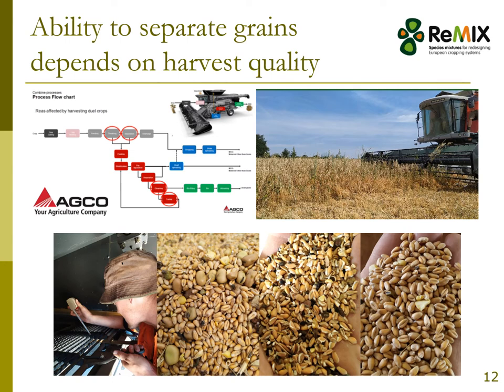Farmers who want to grow intercrops need to take time to optimize their combine settings. This is not an easy task, as most farmers don't know exactly how their combine works. We need to train farmers to better understand their machines in order to adapt combine settings. Some farmers don't harvest the crop themselves and ask a contractor company to do the job — those companies want to harvest very fast and don't want to spend time adapting settings. But if we want to separate the grains from intercrops, we have to take care when harvesting, because harvest quality drives the ability to separate the grains later.